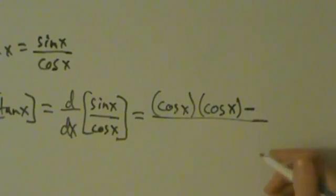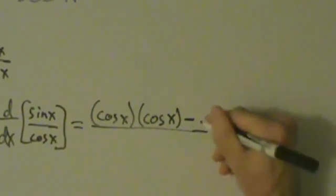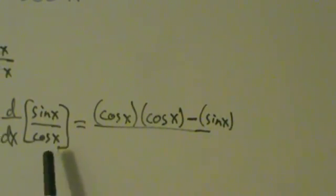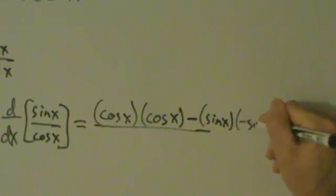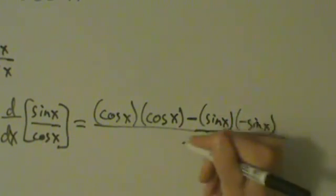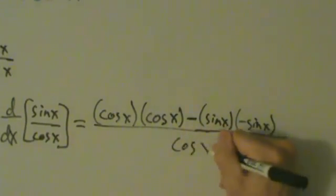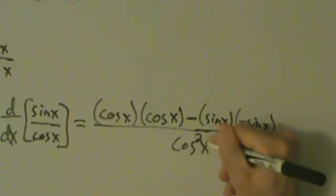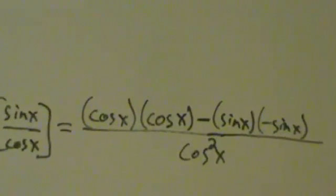Then we have minus the top, which is sin(x), times the derivative of the bottom. Bottom is cos(x), derivative of cosine is negative sine. All over the bottom squared—so if you square cosine, that's just cos²(x). That's what we have here.